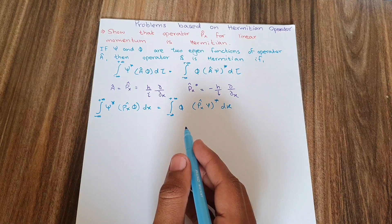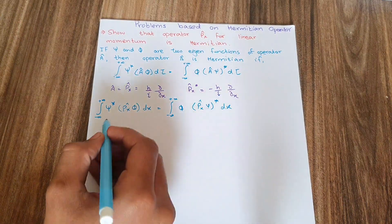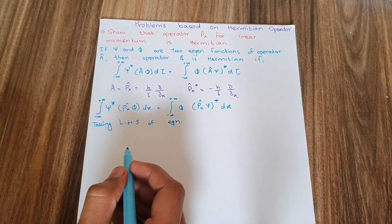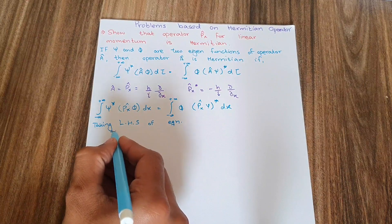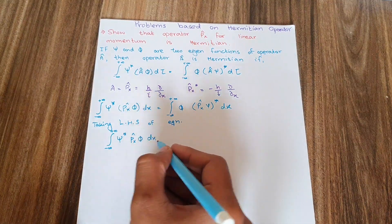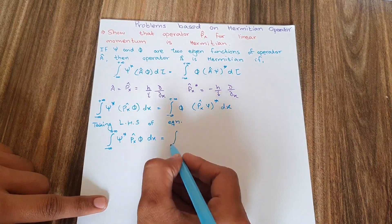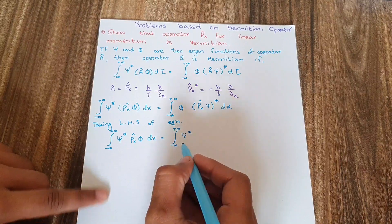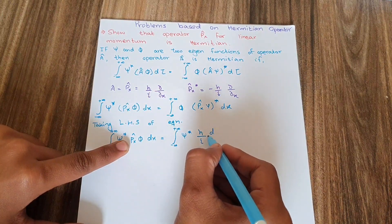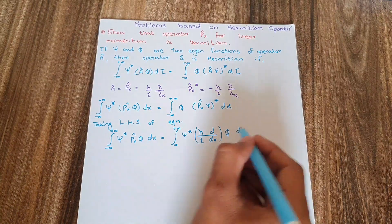Taking the left-hand side of the equation: from negative infinity to positive infinity, psi* times px applied on phi, dx. Now substituting the value of px, this becomes the integral from negative infinity to positive infinity of psi* times (ℏ/i)(d/dx) phi, dx.